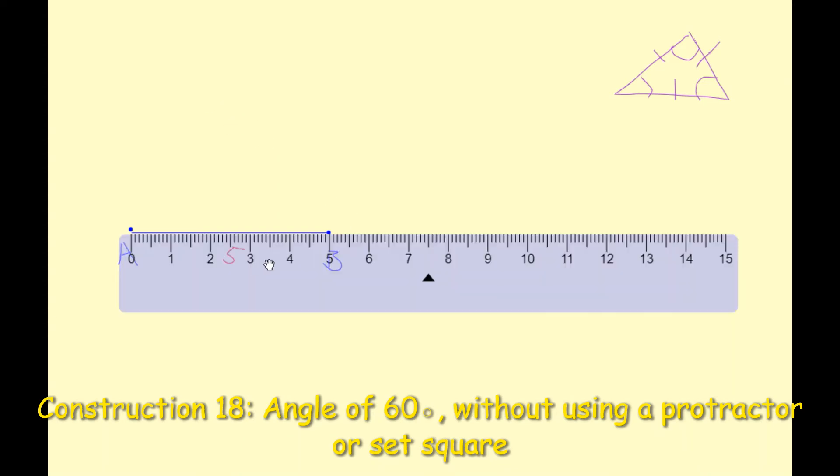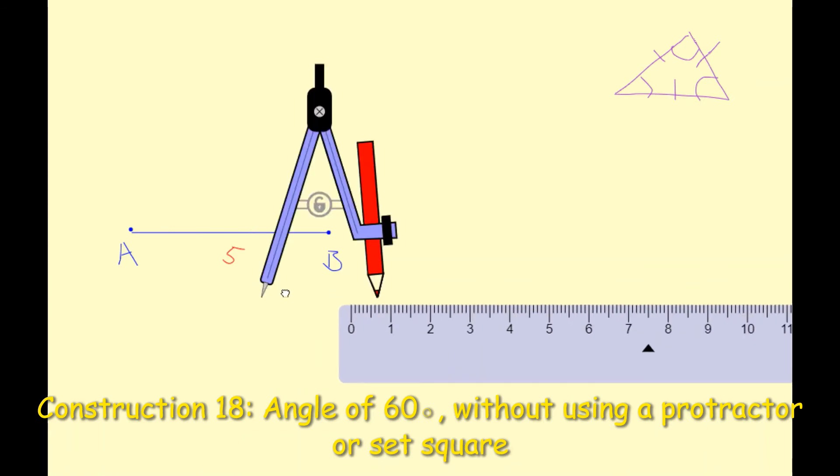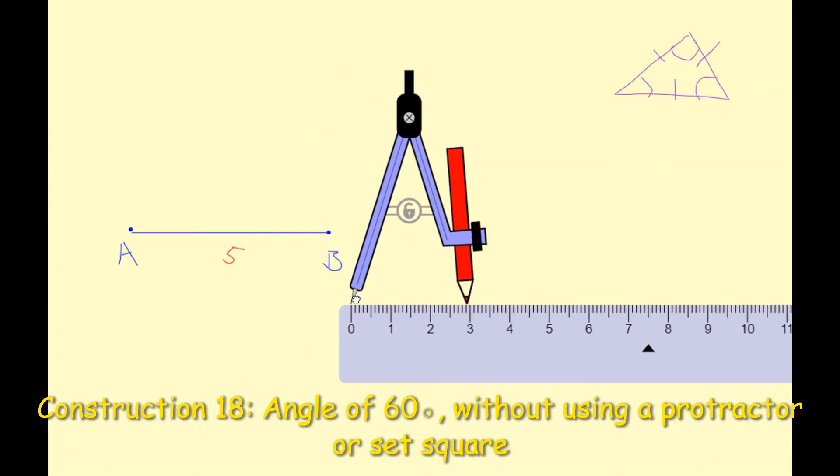So I'm taking my ruler out again and I'm just going to pull it aside here, and I'm going to use my compass. I'm going to set the needle of my compass to zero and I'm going to set my pencil now to five.